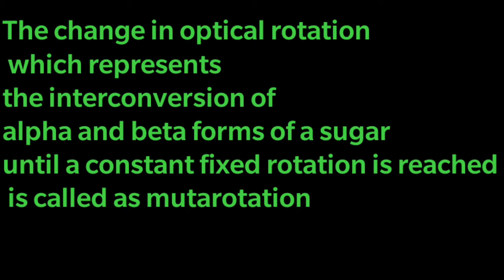So this is mutarotation. This can also be defined as the change in optical rotation which represents the interconversion of alpha and beta forms of sugar until a constant fixed rotation is reached. So there is interconversion of alpha and beta forms of the sugar, and that interconversion represents the change in the rotation of the light. So this change takes place until it reaches a constant fixed rotation, that is where the alpha and beta forms are in equilibrium.